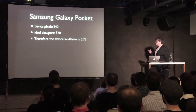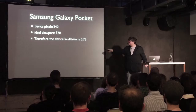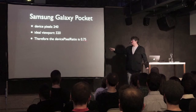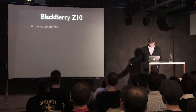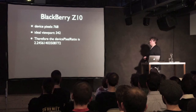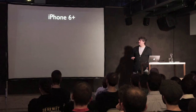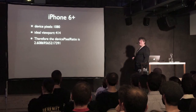On that same Samsung Galaxy Pocket device, I'm running Opera Classic, and its ideal viewport is only 240, which I think makes much more sense because it's a really tiny device — so its device pixel ratio is 1. The device pixel ratio is a function of both the device and the browser. Let's look at the BlackBerry Z10: 768 device pixels, ideal viewport of 342, which gives us a slightly odd device pixel ratio. The iPhone 6 Plus has 1080 device pixels and an ideal viewport of 414, which gives a device pixel ratio that's funny — especially because Apple is lying about it, claiming it's 3, but that's a bug.